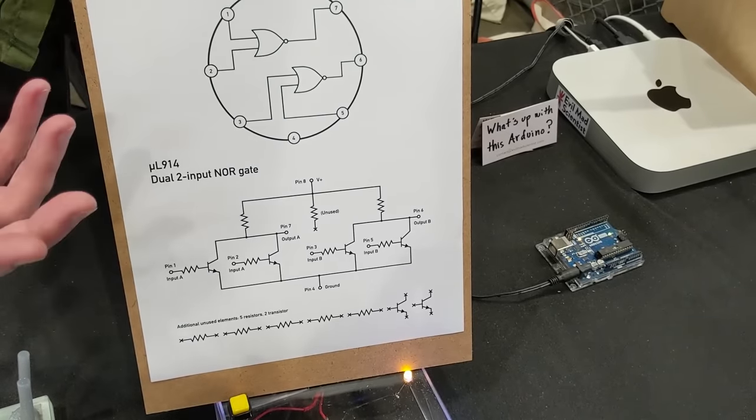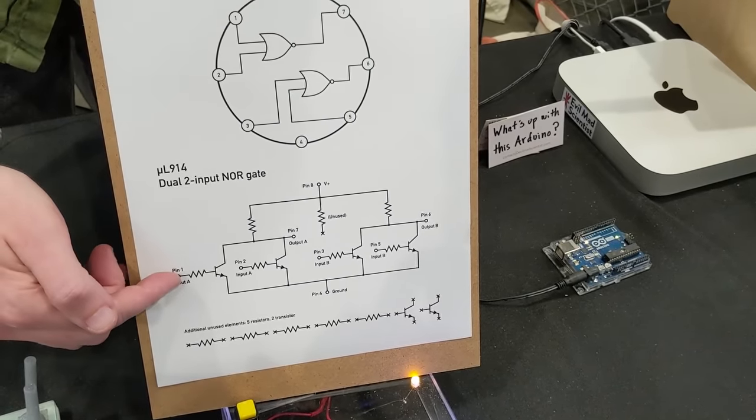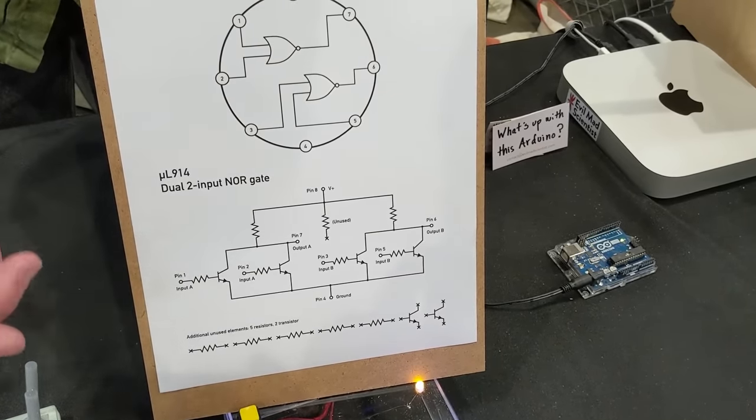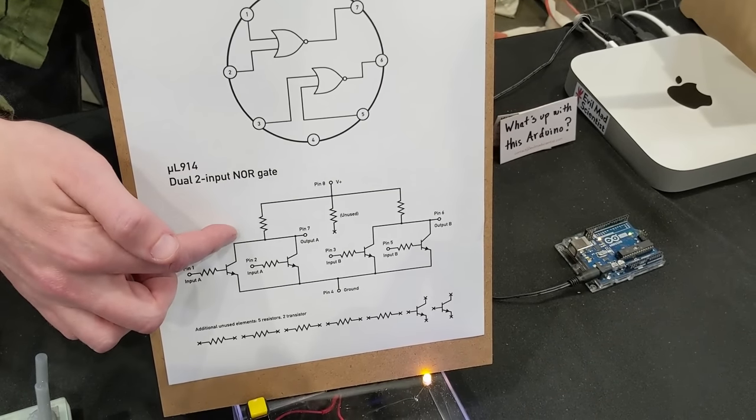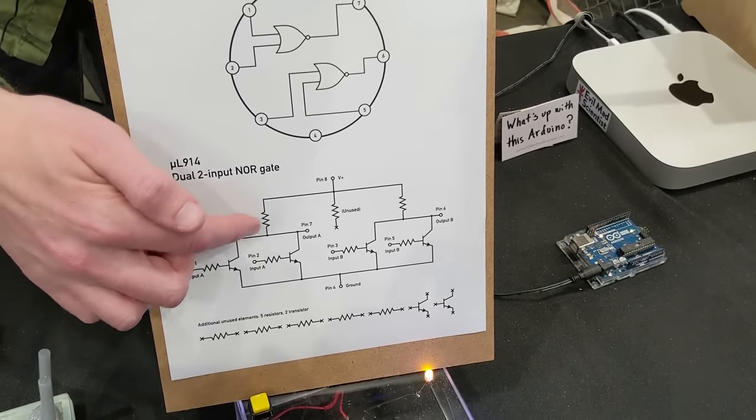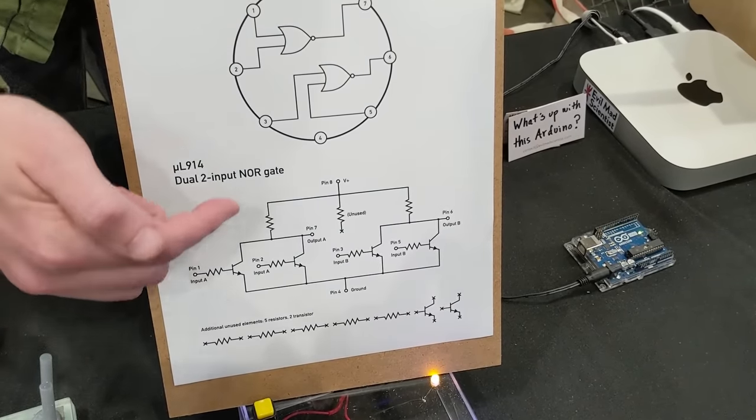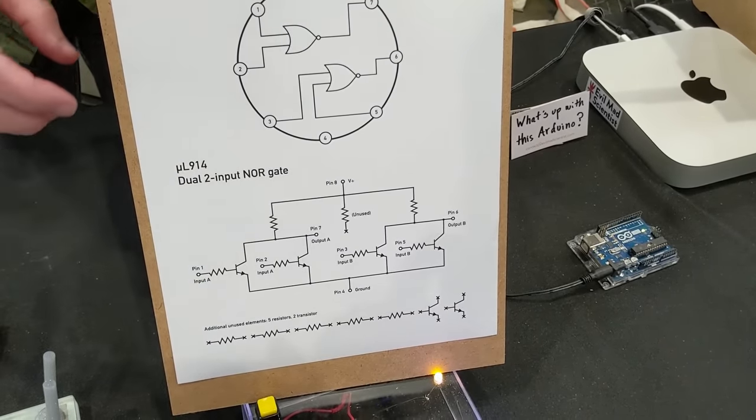In loose hand-waving terms, when you apply a voltage to either of these two input transistors, it turns on that transistor and pulls down this point, the collector, to ground, and that's our output. So, if either input is high, our output is low, and that's how this NOR gate works.